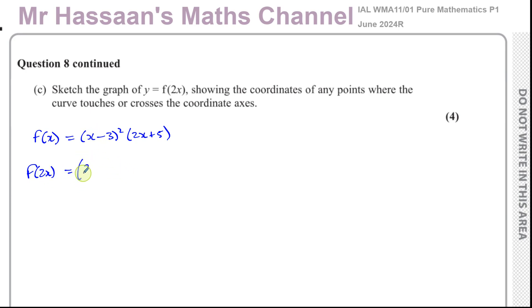So instead of X here I'm going to have 2X, so I have 2X minus 3 squared times, instead of this X I'm going to have 2X so it will be 2 times 2X plus 5, which gives us 2X minus 3 squared times 4X plus 5. I don't want to expand any more than this because this is exactly how I want it for sketching the graph. So I'm going to sketch the graph y equals 2X minus 3 squared times 4X plus 5. That's the graph I'm going to sketch. This is f of 2X.